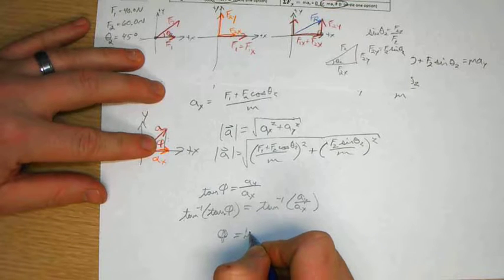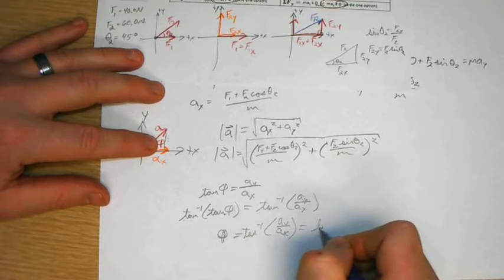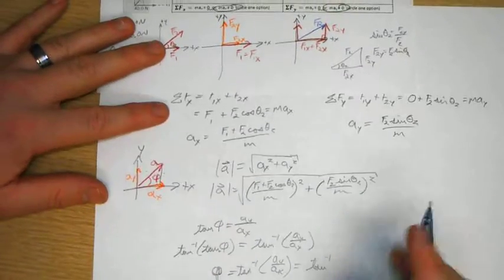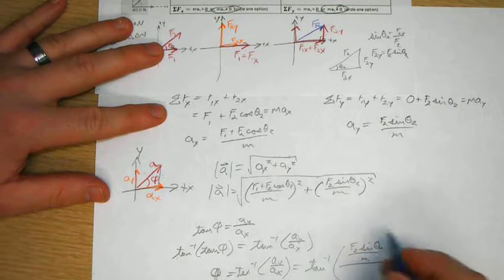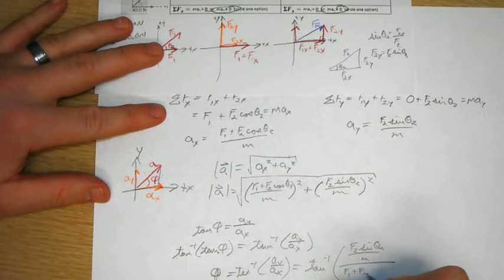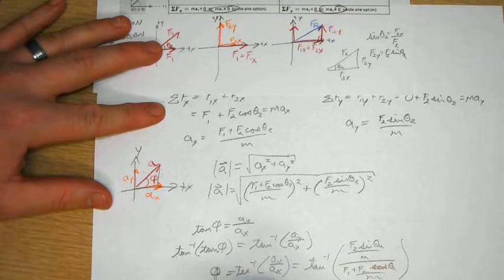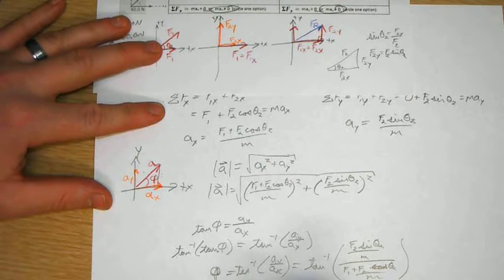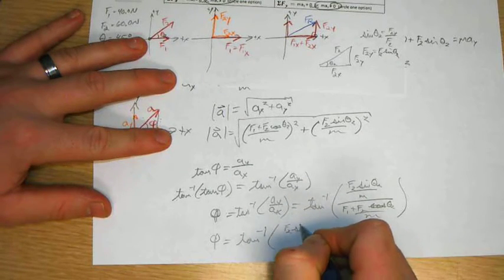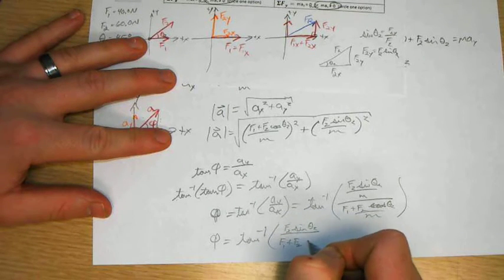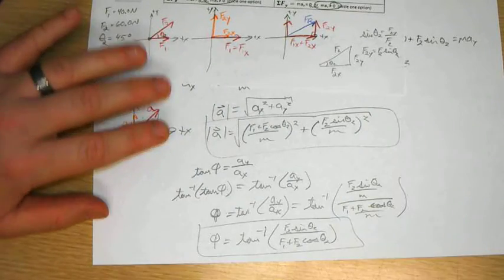So that just equals inverse tangent ay over ax. Or, if you want to simplify it a little bit, ay is F2 sine theta 2 over m over F1 plus F2 cosine theta 2 over m. So phi just equals inverse tangent of F2 sine theta 2 over F1 plus F2 cosine theta 2. I'll let you put the numbers in.